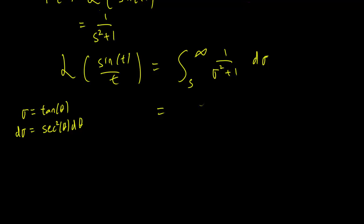Right, and making the substitution we're going to have to change the limits a little bit, so this is going to be arctan of infinity to arctan of s. And this is going to be tangent squared theta plus one, because we replace all the sigmas with theta.